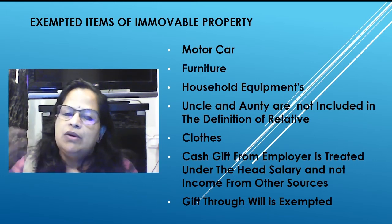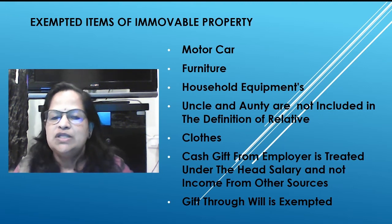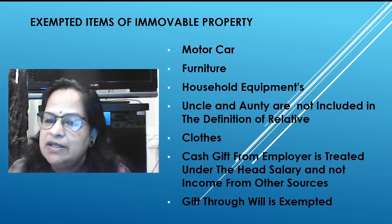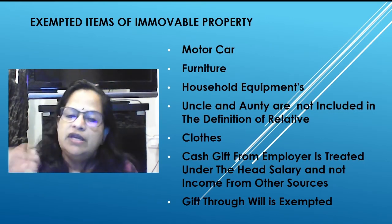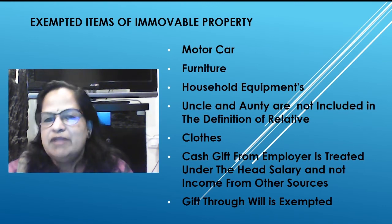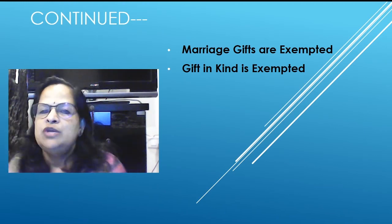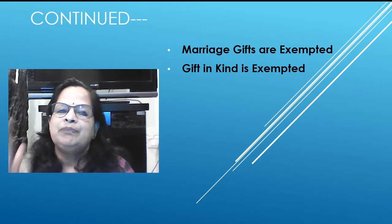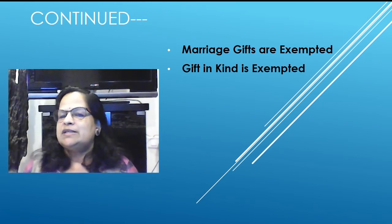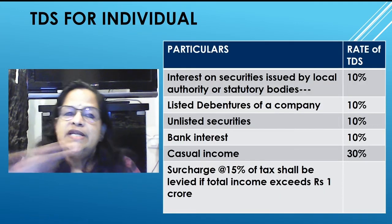Exempted items: car, furniture, and household equipment are exempted. Uncle and aunt are not included in the definition of relative. Clothes are not immovable property. Cash gift from an employer is treated under the head salary, not income from other sources. Gift through a will is exempted. Marriage gifts are exempted — people make use of this exemption. Gift in kind is also exempted.